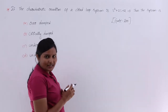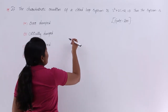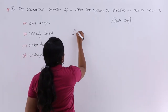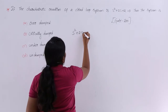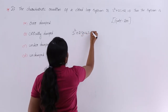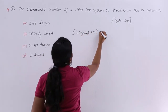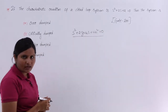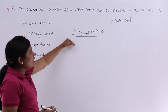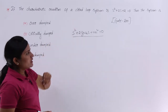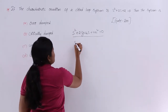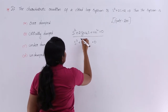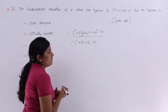For a general second order system, the denominator characteristic equation will be S² + 2·ζ·ωn·S + ωn² = 0. This is the general characteristic equation of a second order control system. The given characteristic equation is S² + 2S + 2.